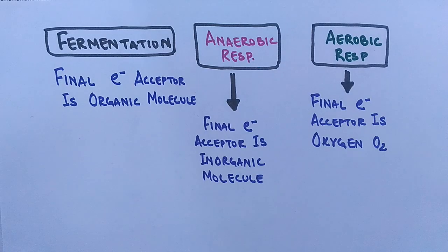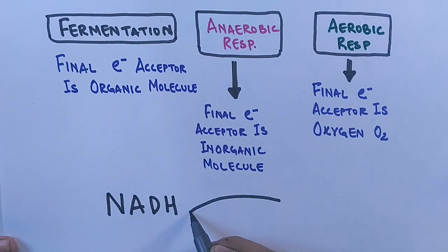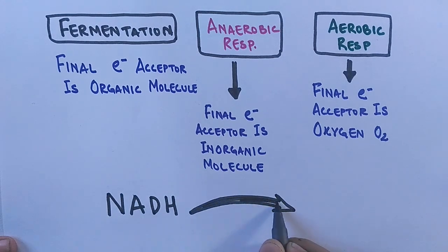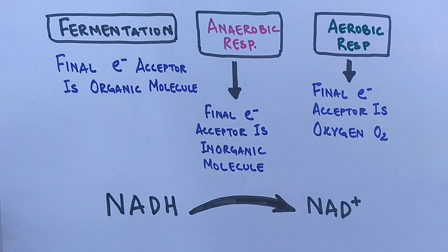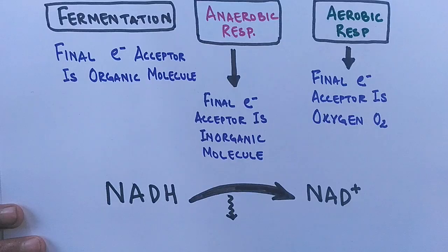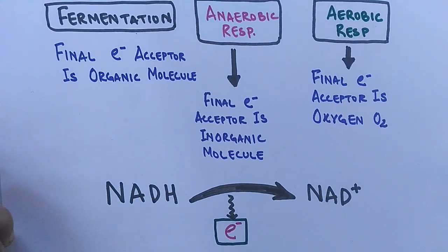The molecule that generates electrons in the fermentation process is NADH — the reduced form of NAD⁺, nicotinamide adenine dinucleotide. NADH gives off electrons in this reaction, thereby acting as a reducing agent, and we ultimately get the oxidized form, NAD⁺.